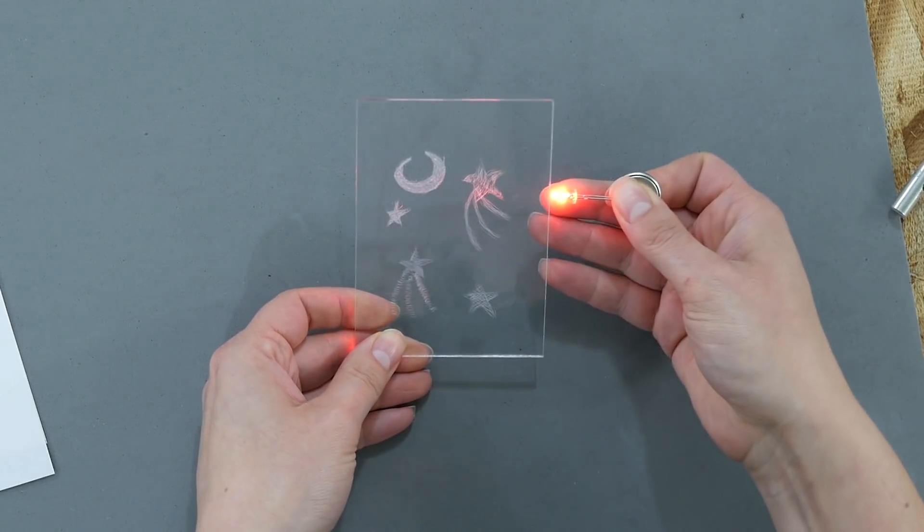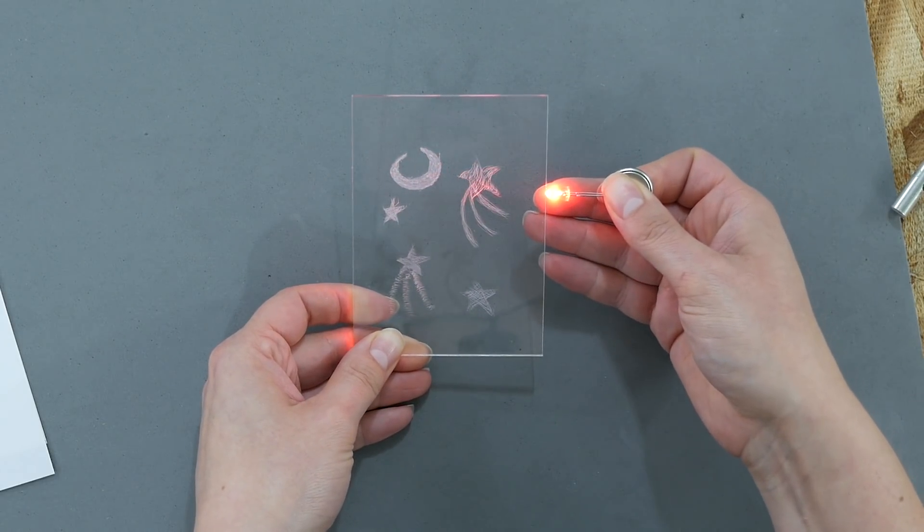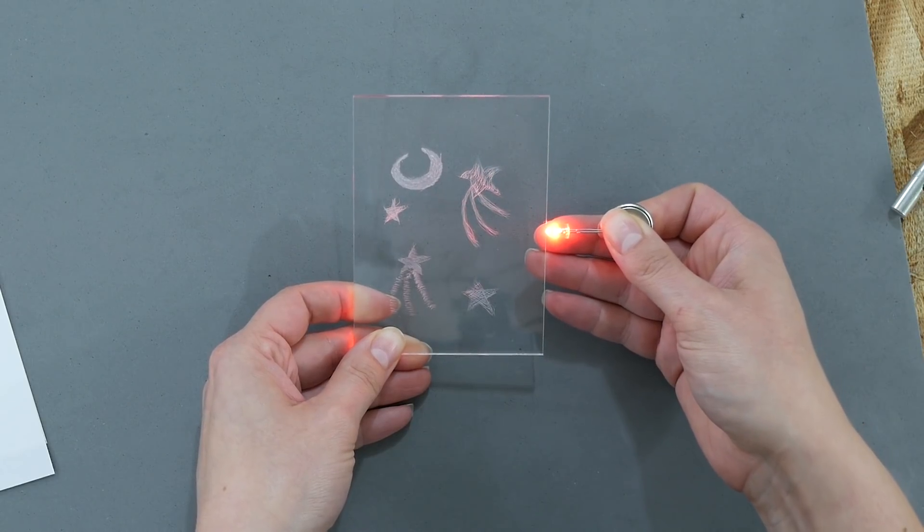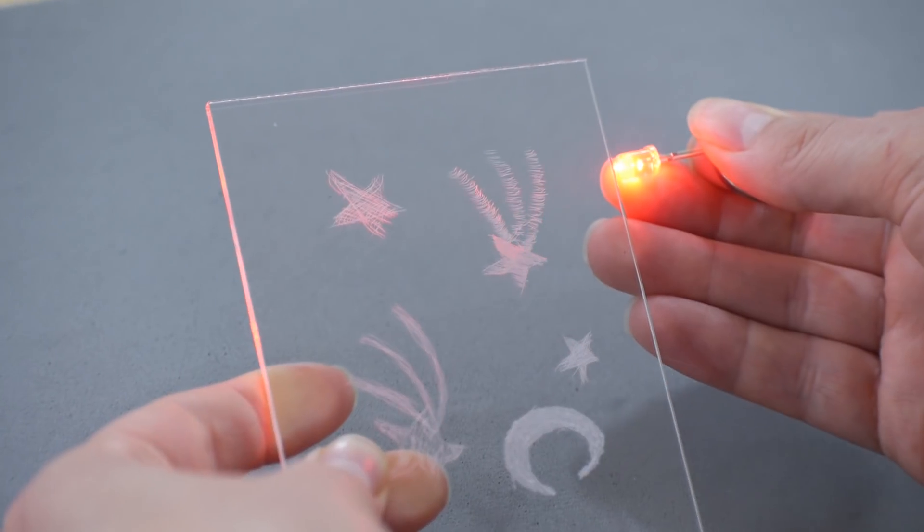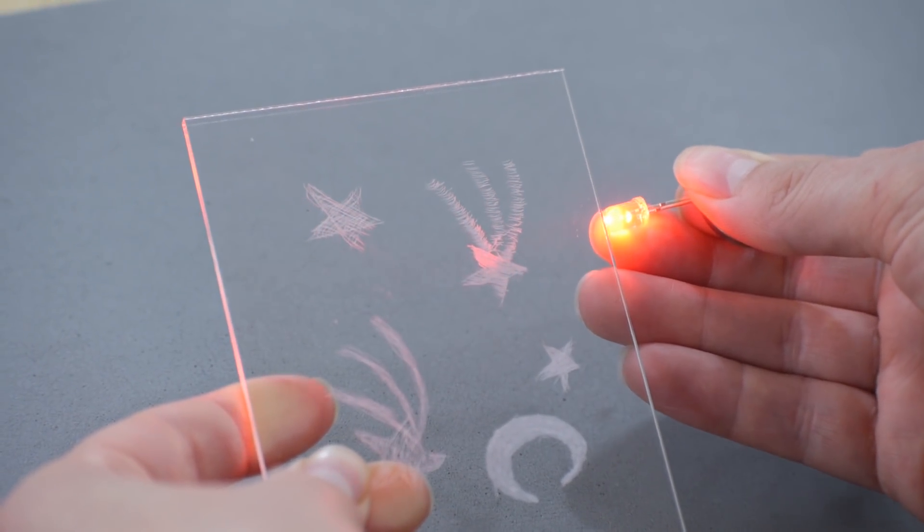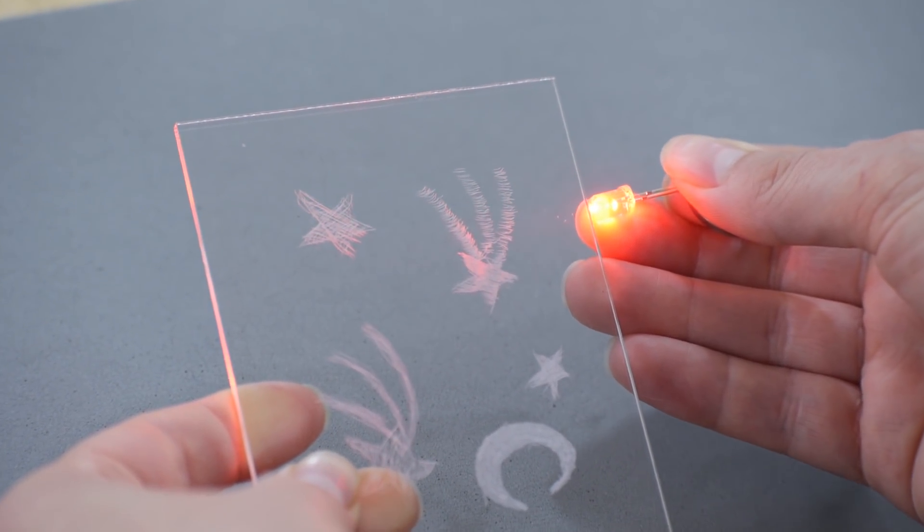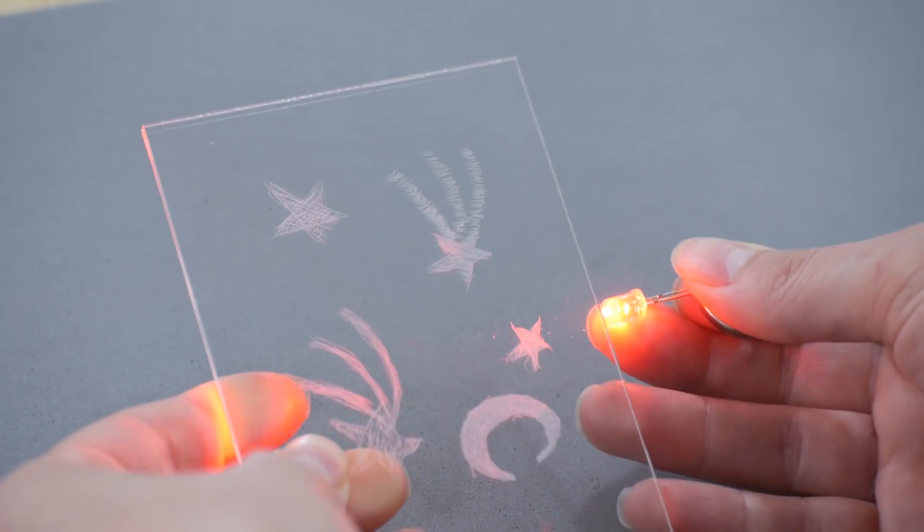For some of the stars I etched in one direction versus the other so you could see that when the scratch is perpendicular to the light it catches the light much better, whereas if the scratch is going parallel to the light it doesn't catch it very well. Really it just catches the leading edge of the scratch.